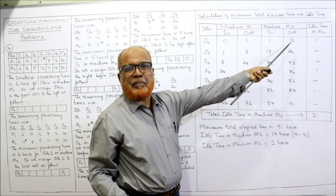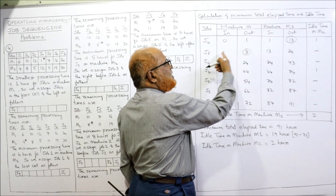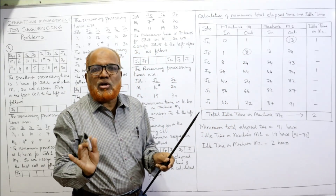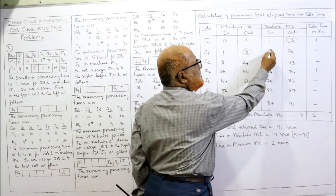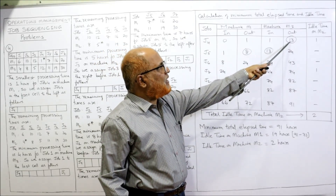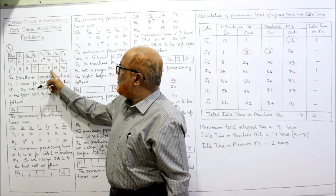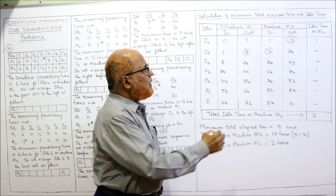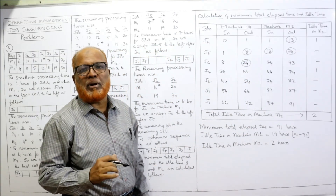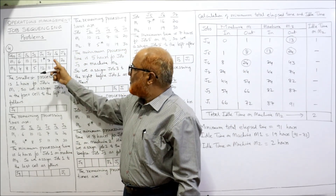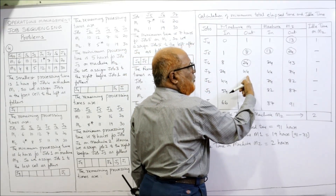The finishing time of J4 on M2 is 13. J5 finishes on M1 at hour 8, but M2 is still busy until 13, so we take the higher value — 13. J5 starts on M2 at 13, takes 11 hours, finishes at 24. Compare with M1 out for J6, which is also 24 — same value, so no idle time. J6 on M2 takes 19 hours: 24 plus 19 equals 43.